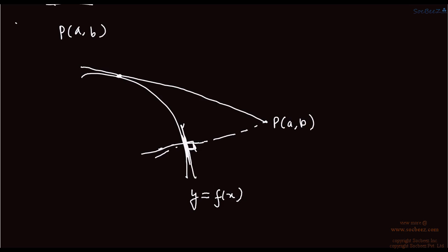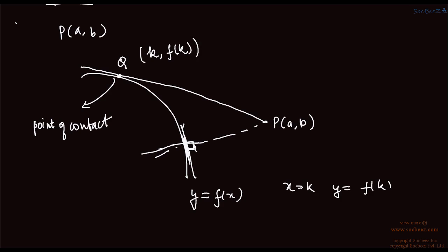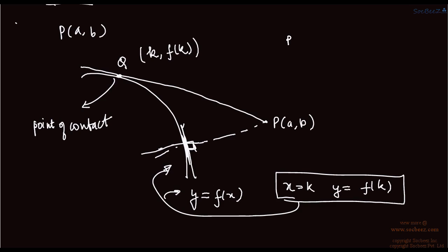The tangent from external point P (a, b) will be at some point Q on the curve, which is called the point of contact. Let's say that point is (k, f(k)), because if you put x equal to k then y would be f(k). The slope of line PQ would be: b minus f(k) upon a minus k.